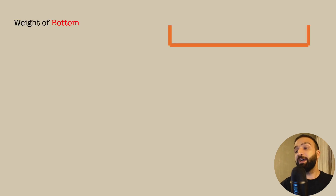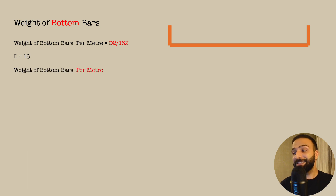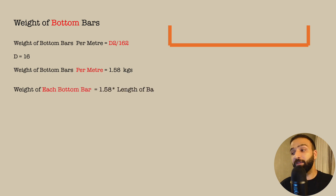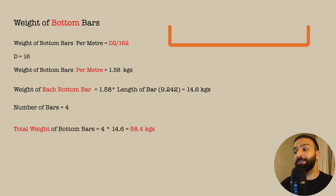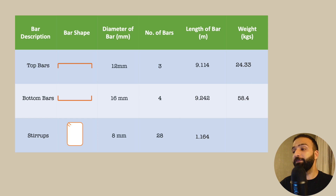For the bottom bars, weight per meter is D² ÷ 162: 16² ÷ 162 = 1.58 kg/m. The weight of each bottom bar is 1.58 × 9.242 = 14.6 kilograms. With 4 bottom bars, the total weight is 4 × 14.6 = 58.4 kilograms.